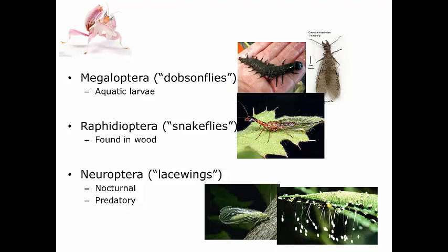Up next we have Raphidioptera, commonly known as snake flies, very closely related to the dobson flies and to the Neuroptera. If you look at a snake fly, they look an awful lot like both groups — like a dobson fly and like a lacewing. The Raphidioptera are predatory organisms both as adults and as larvae.